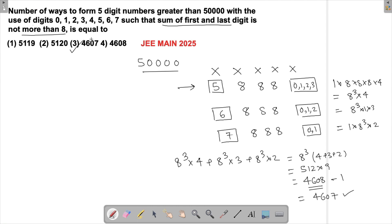4607 will be my final answer. This was an okay question. We could have attempted it. It wouldn't have taken us much time to do that if I had understood that the digits could be repeating.